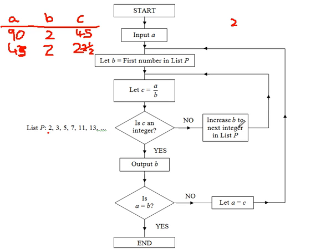Increase B to the next integer, so now B is 3. Let C equal A divided by B — 15. Is C an integer? Yes. Output B. Is A equal to B? The answer is no. Let A equal C, so A is now 15.